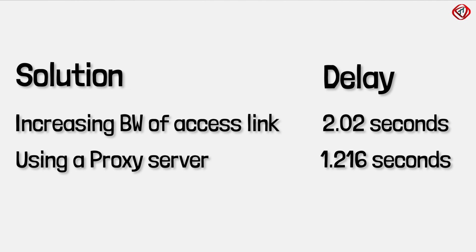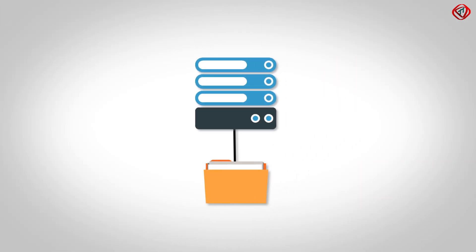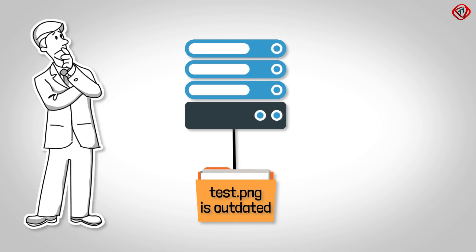By comparing the delays in both solutions, it is clear that a proxy server is the better option. While increasing bandwidth may be cheaper initially, installing a proxy server often proves to be more cost effective in the long run due to lower ongoing costs. However, keep in mind that the copy of an object in the proxy server may become outdated — so how do we ensure that the stored object is always up to date?